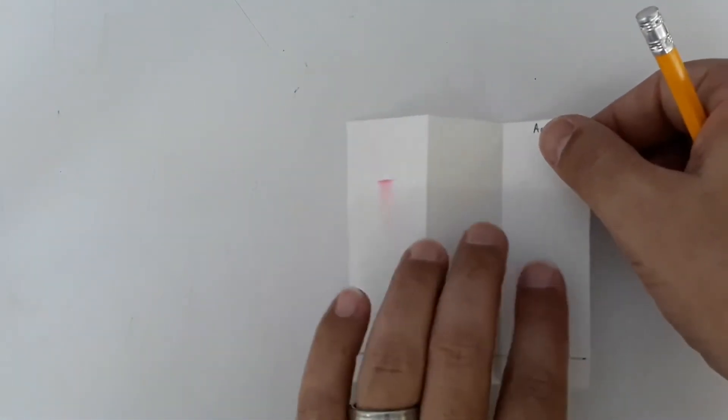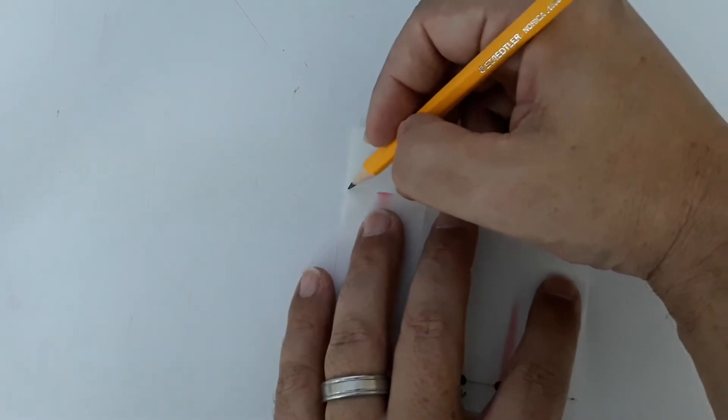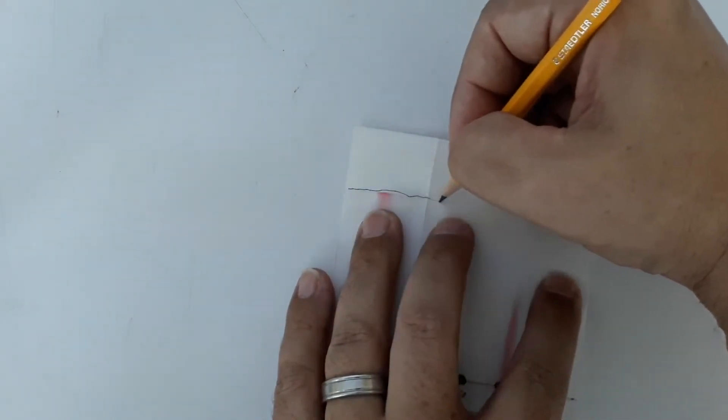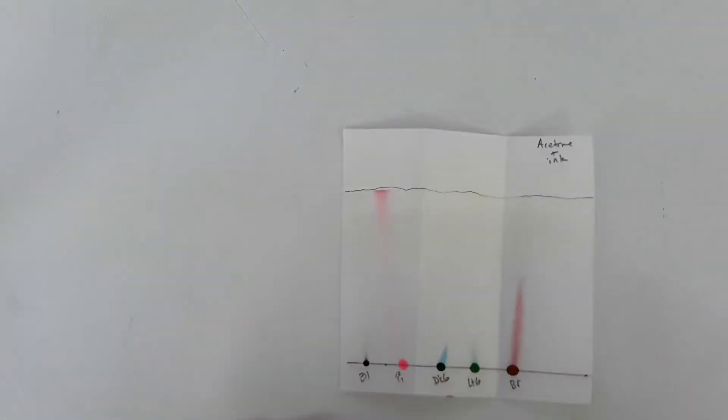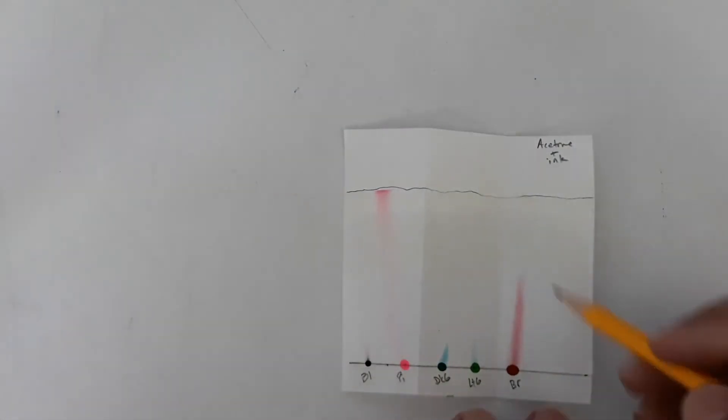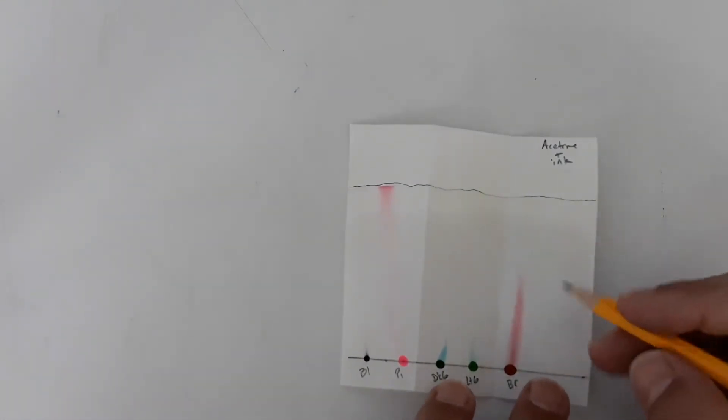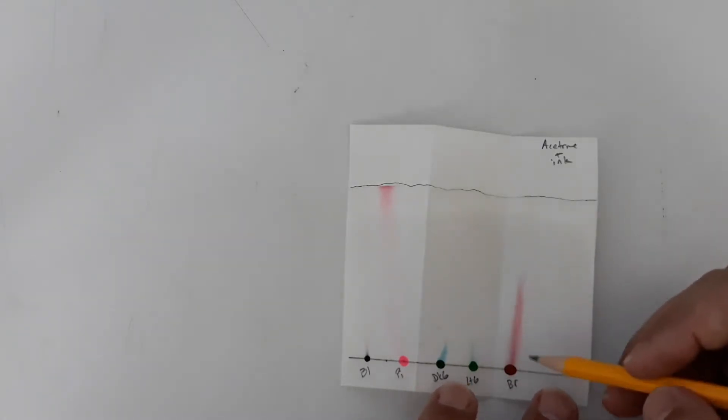Okay, here is the acetone chromatograph. I'm going to trace the edge of the solvent front because the acetone is going to evaporate really quick and that solvent front is going to recede. You can see it's coming back down the paper already and then I'm going to trace out the colors that I see.